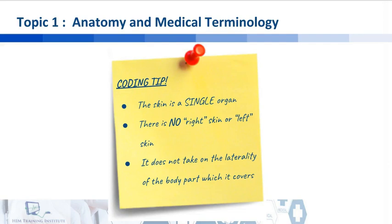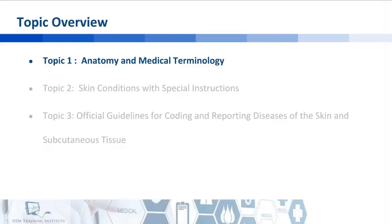Here's a useful tip for us. Remember that the skin is a single organ. There is no such thing as a right skin or a left skin, meaning the skin does not carry the laterality of the body part which it covers. Keep this in mind as this would be very useful not only for ICD-10 but even more so when we move into CPT coding. And that's your review of the anatomy and medical terminology related to the skin.